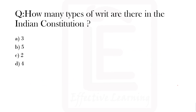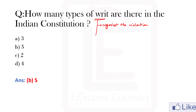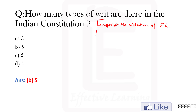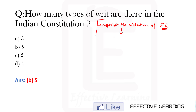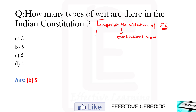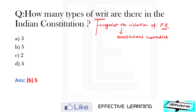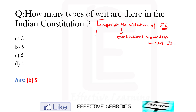How many types of writs are there in the Indian Constitution? The answer is option B, that is 5. There are 5 writs in the Constitution of India. These writs are against the violation of fundamental rights.